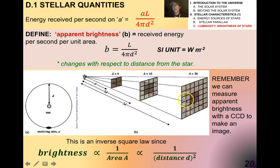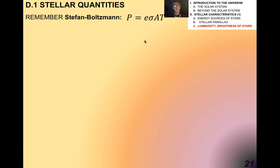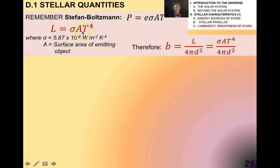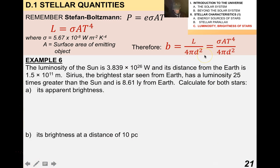We can measure apparent brightness with a CCD camera — a charge-coupled device — and that's how we get astronomical imaging. If you remember the Stefan-Boltzmann equation, L equals the Stefan-Boltzmann constant σ times A times temperature in Kelvin to the fourth power. We can combine our expression for apparent brightness with luminosity to get b equals σ A T to the fourth over 4π D squared — and this is given to you in the data booklet.